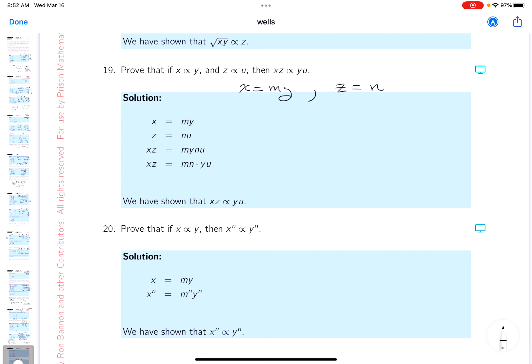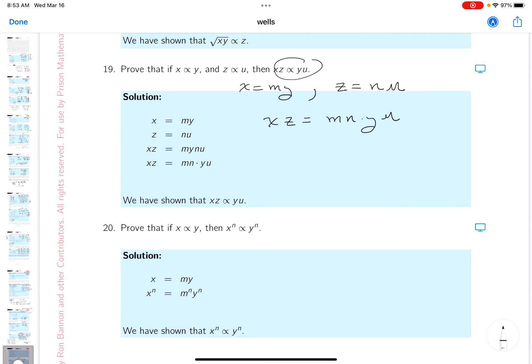I'll say n times u. What do they want me to do? They want me to take this and show this. So I'm going to say xz, just multiplying mn times yu. I've shown this right here, and that's...